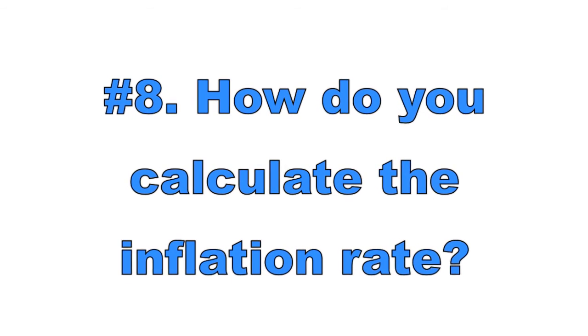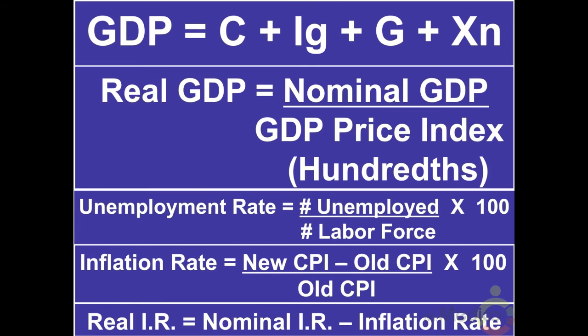Number 8: How do you calculate the inflation rate? The inflation rate measures the percentage increase in consumer prices over a period of time. To calculate it, we use a consumer price index or CPI. The CPI tracks the prices of goods and services that the typical household buys using a market basket sample. The CPI equals the market basket of one year divided by the market basket of a base year. The inflation rate equals the new CPI minus the older CPI, divided by the older CPI, times 100. Prices generally rise over time, but sometimes they fall. Deflation occurs when the inflation rate becomes negative. Be careful not to confuse this with disinflation, which is when the rate of inflation simply slows down.